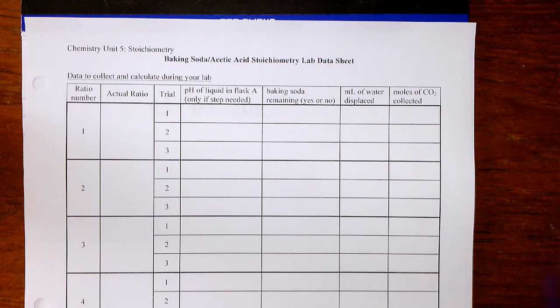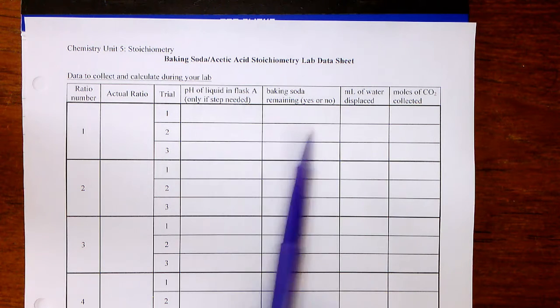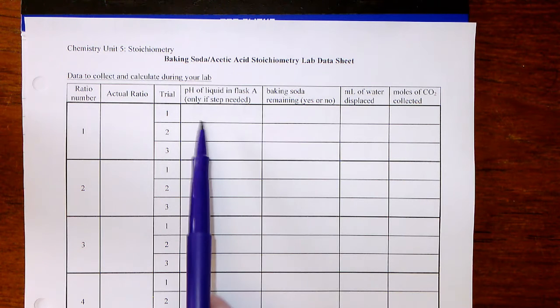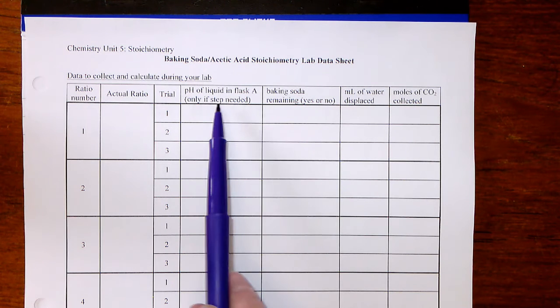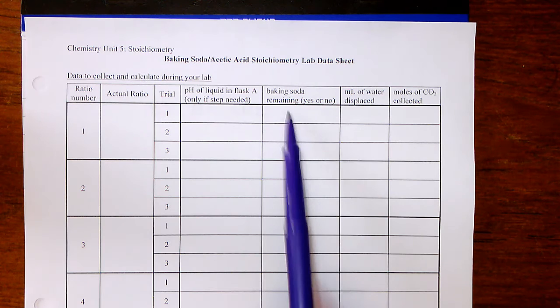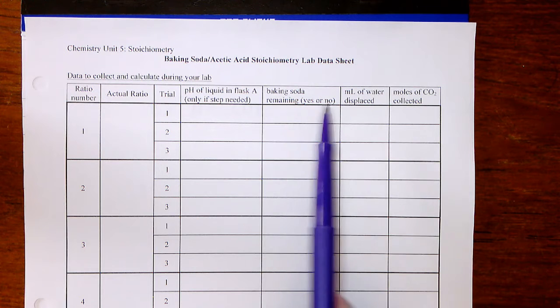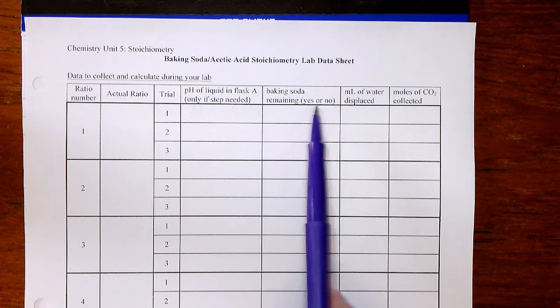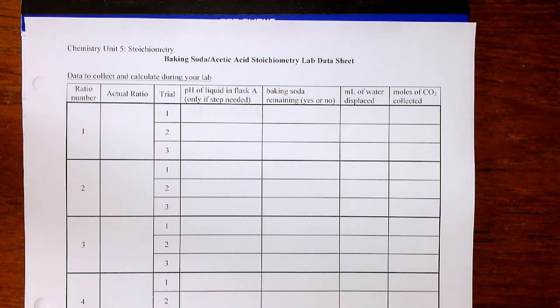This video is going to go through the purpose of these two columns: pH of liquid in flask A, and baking soda remaining — yes or no.